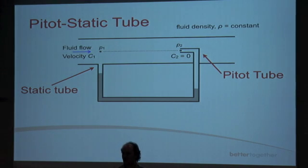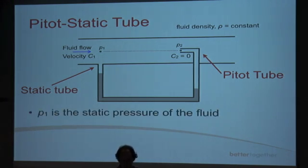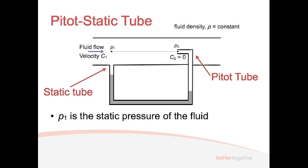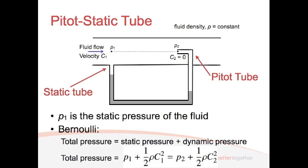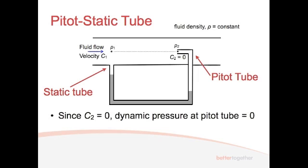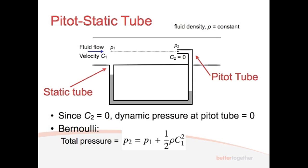The flow at the entrance to the pitot-tube stagnates — it stops, it comes to rest. So we have P1, which is the static pressure of the fluid. From Bernoulli, we know that the total pressure equals the static pressure plus the dynamic pressure. This is Bernoulli's equation without the Z term, because we're dealing with a horizontal system: P1 + ½ρC1² = P2 + ½ρC2². But since C2 is zero, the dynamic pressure of the pitot-tube is zero, and so P2 is the total pressure of the pipe.